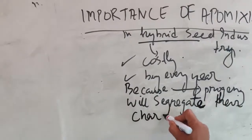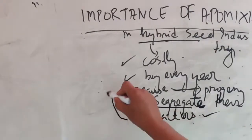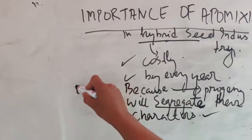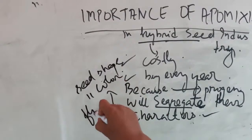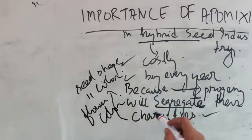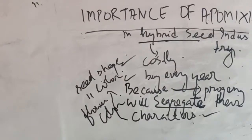When hybrid seeds are sown in the soil, the offspring characters segregate. The characters from the mother and father plants separate, so the desired hybrid characters are not maintained. The genetics of the seeds change, meaning the same good characteristics cannot be reliably passed to the next generation.